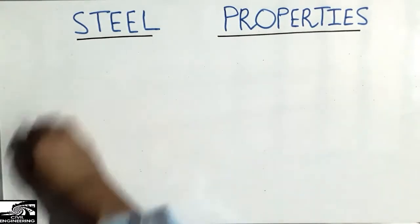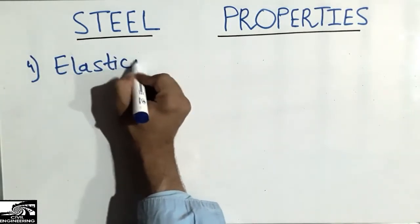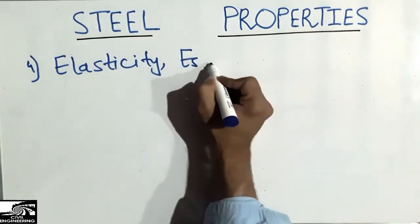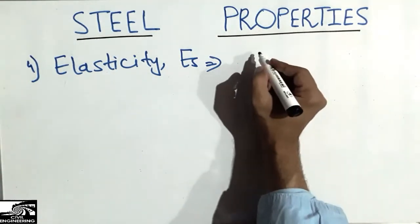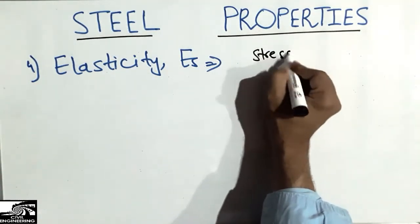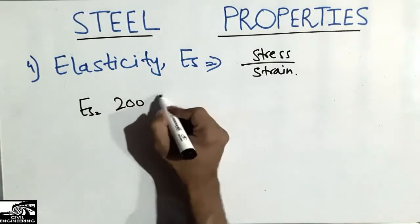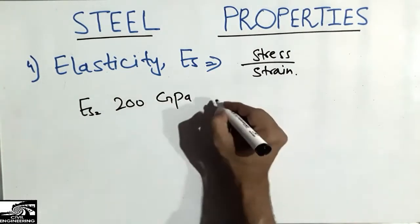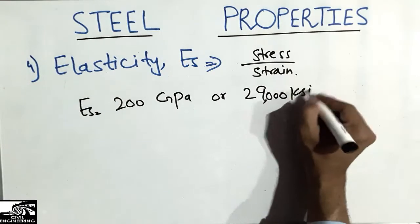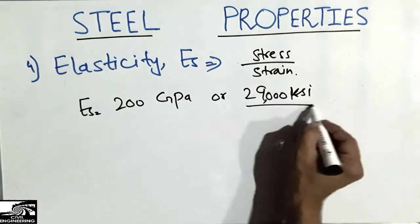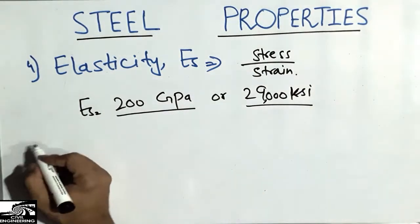The fourth property is the elasticity of the steel bar, also called the modulus of elasticity, represented by E. It is defined as the ratio of stress to strain. The modulus of elasticity of steel is 200 gigapascals, or equivalently 29,000 KSI.